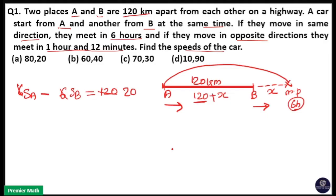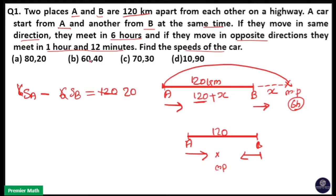Next, if they move in opposite directions: A and B are 120 km apart. If they move in opposite directions, they will both together cover 120 km to reach the meeting point. They meet in 1 hour and 12 minutes. 12 minutes equals 12 divided by 60, which is 0.2, so the total time is 1.2 hours.